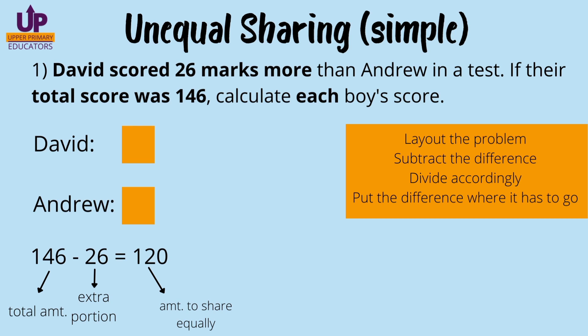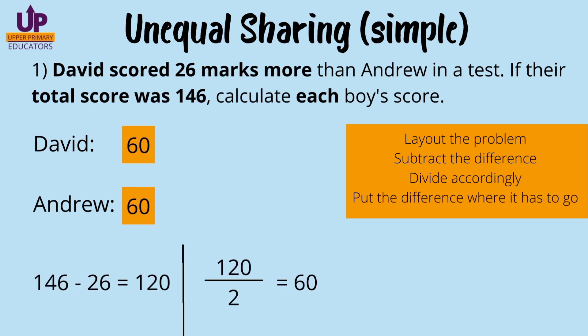So we know 146 is the whole — the total number of marks, the total amount. 26 is the extra portion that we are taking away. So you take away the extra portion and you are left with the amount that has to be shared equally between David and Andrew. That 120 marks has to be shared equally between them because we took out the extra portion.